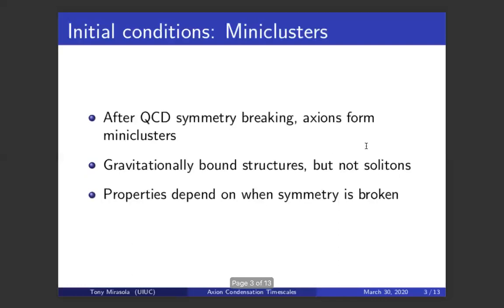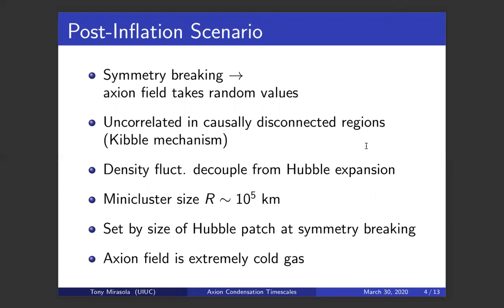The initial conditions are that after the symmetry is broken, the axions form structures called mini clusters, which are gravitationally bound structures, but they're not solitons. The most straightforward scenario is called the post-inflation scenario, because in this case, the symmetry is broken after inflation has ended. When this happens, the axion field takes on random values that are uncorrelated in different causally disconnected regions of the universe. This is called the Kibble mechanism, but it is correlated within one Hubble patch. This causes density fluctuations that decouple from the Hubble expansion. This sets the size of these mini clusters.